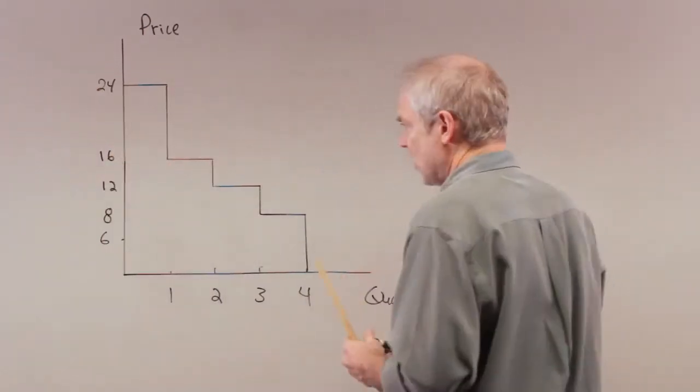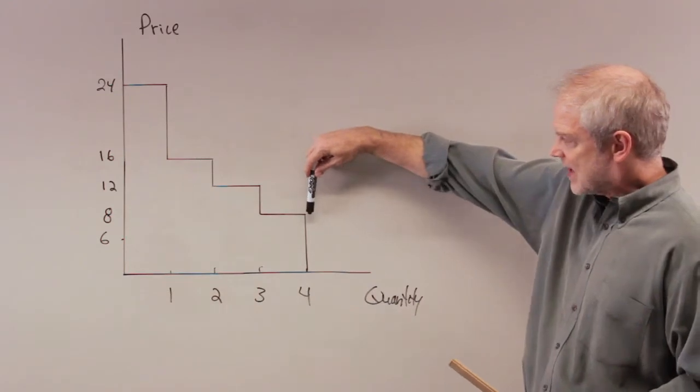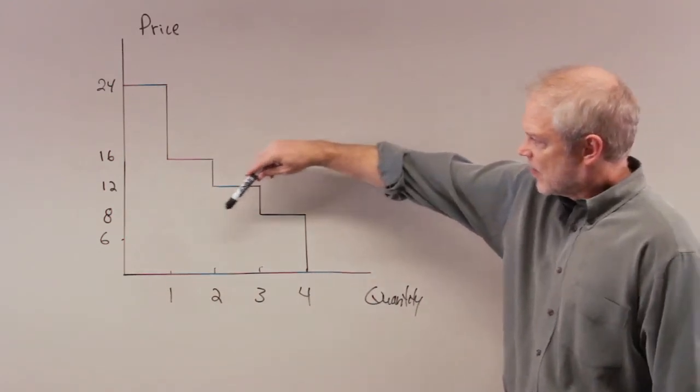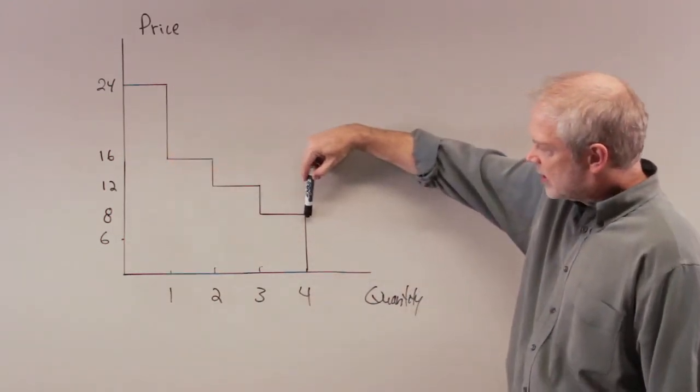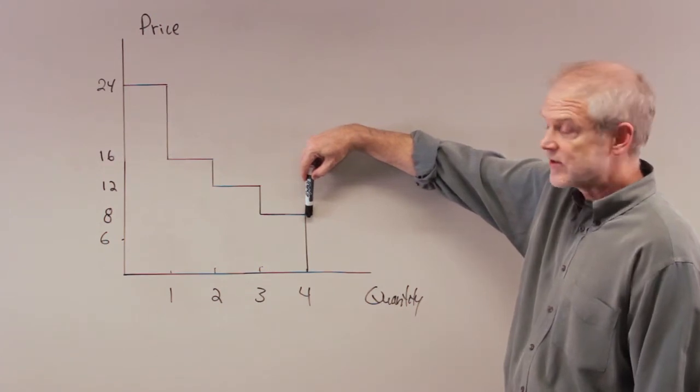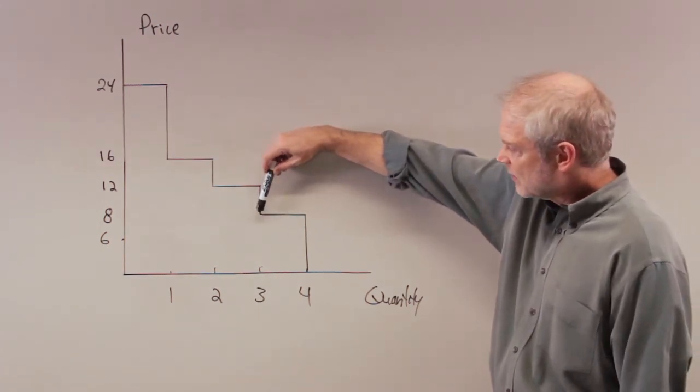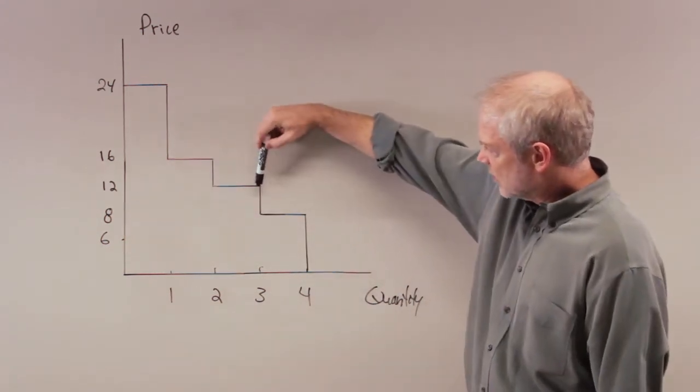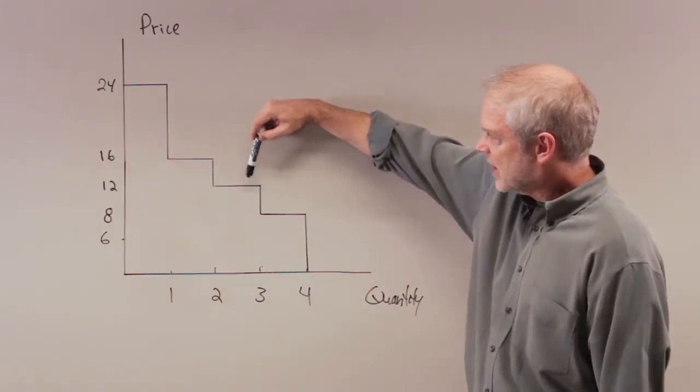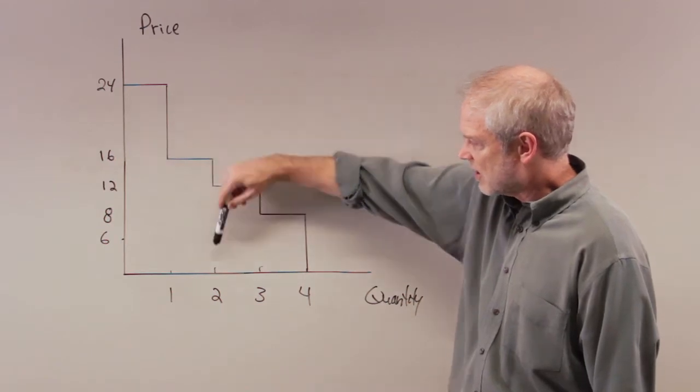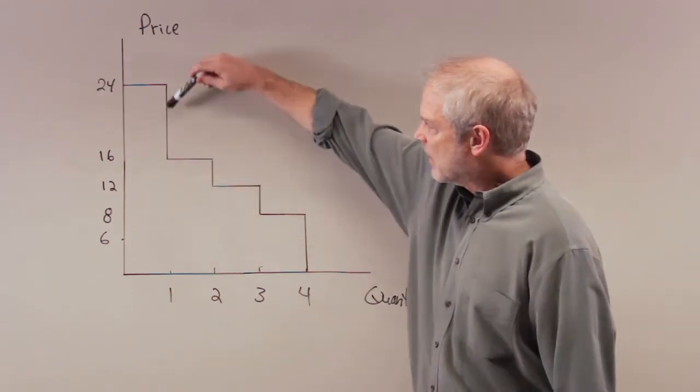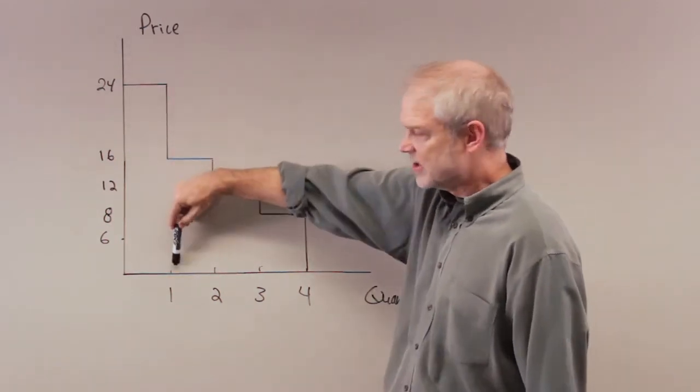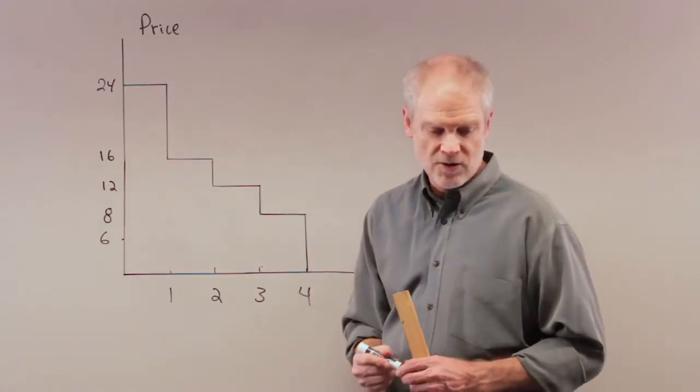And what I've drawn here is that when the price is $8, the quantity consumed is 4 units. When price rises to $12, the number of units sold is only 3. When price rises to $16, the number of units sold is 2. And when price rises to $24, the number of units sold is 1.